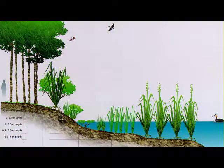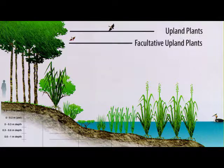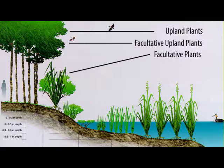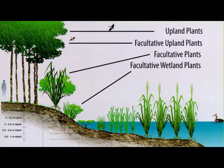There are also others within that range, going from upland to facultative upland — those plants that only occasionally would occur or show up in a wetland. Then we have facultative plants, which can occur about evenly in non-wetland and wetland systems. Then we have facultative wetland plants, which almost always occur in a wetland, but there are cases where they don't. And then the obligate plants, like this button bush, that occur almost exclusively in wetlands and are rarely found outside of that.